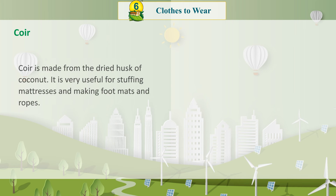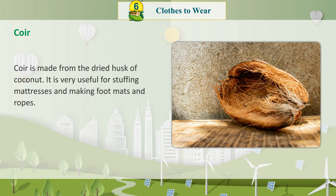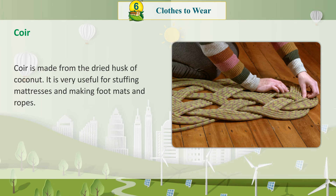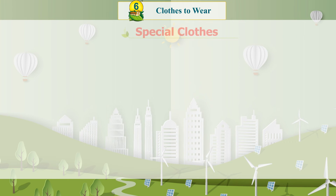Coir: Coir is made from the dried husk of coconut. It is very useful for stuffing mattresses and making footmats and ropes.